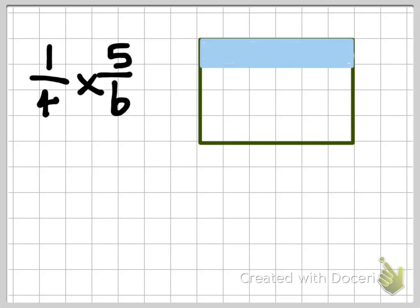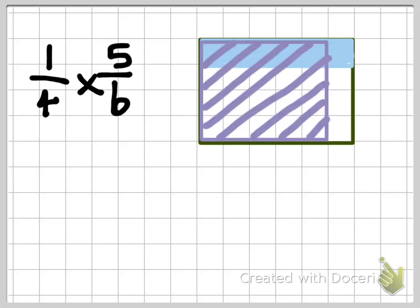The next step is to show 5 sixths on top of my 1 quarter. To find the answer, I'm going to see how many squares I have that have both blue and purple in it.